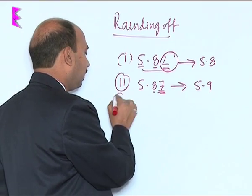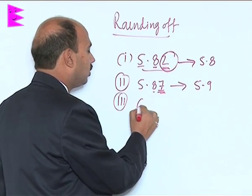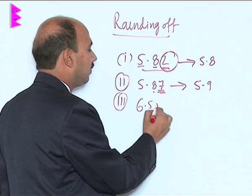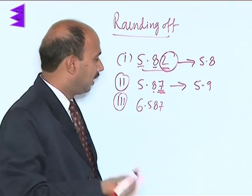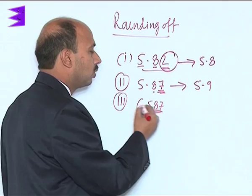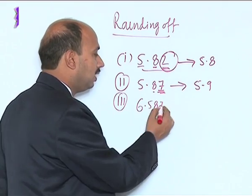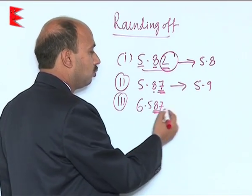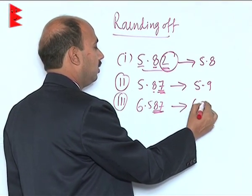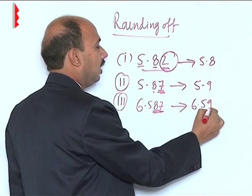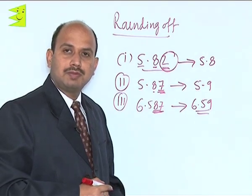Similarly, take a third example: suppose you have 6.587. Here 7 is greater than 5, so we round up — it becomes 6.59.